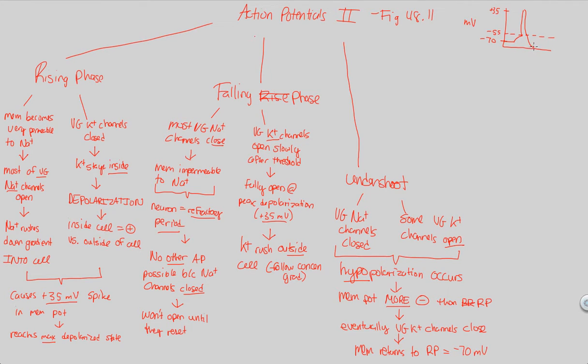So I did the undershoot. Let me just continue this now. Now I'm just going to go back to this, back to my regular old negative 70 RP. This was an action potential that I just did here. I rose, I fell, I undershot, and now we start this whole process over.